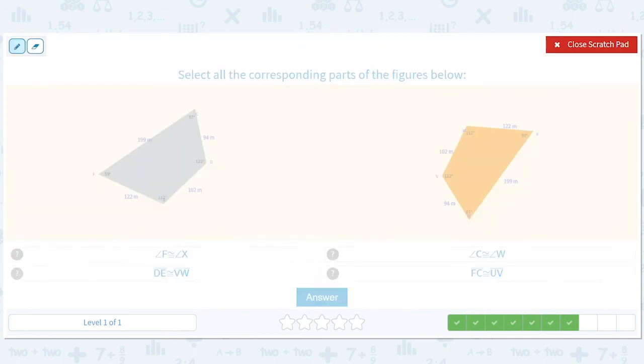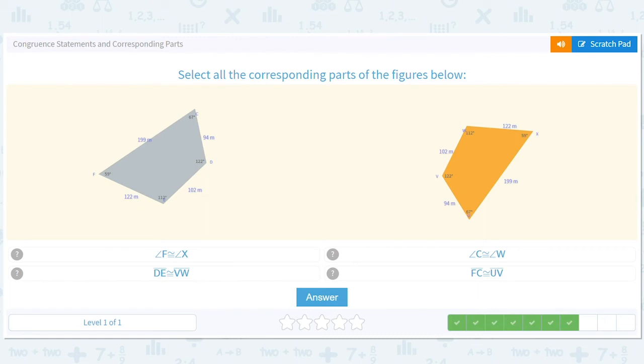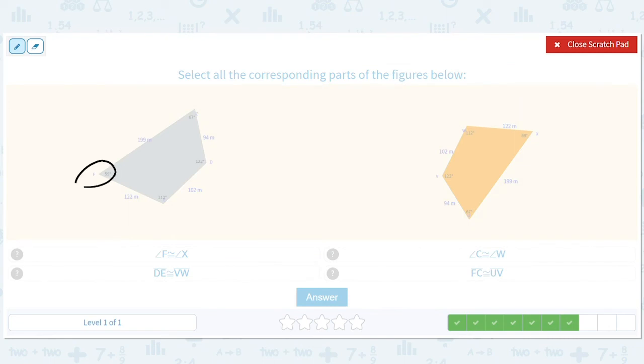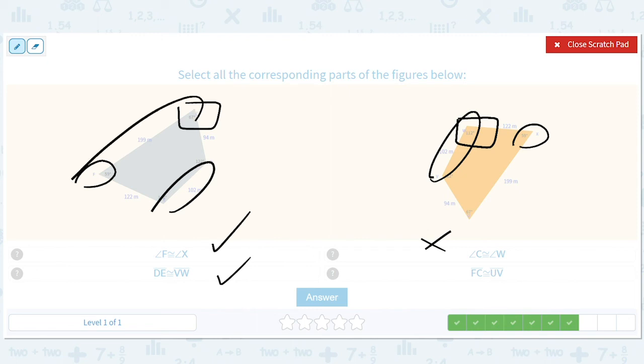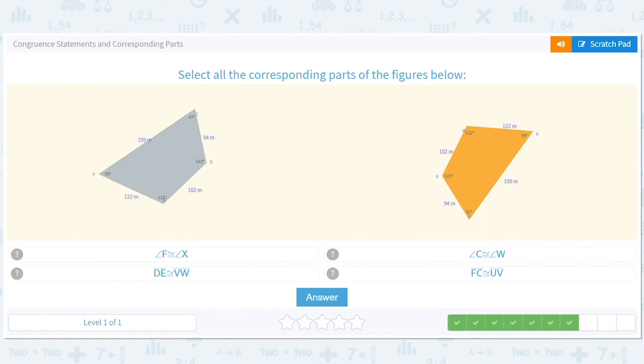Over here, we have another, we have to choose all the ones. So we have, let's go through them. Angle F and angle X. Are they both the same? Yes. D, E and V, W. Are they both the same? Yes. Angle C and angle W. Are they both the same? No. F, C, 199, and U, V, 94. Are they the same? No. Again, I'm going a little bit fast here because I don't want to bore you guys too much.